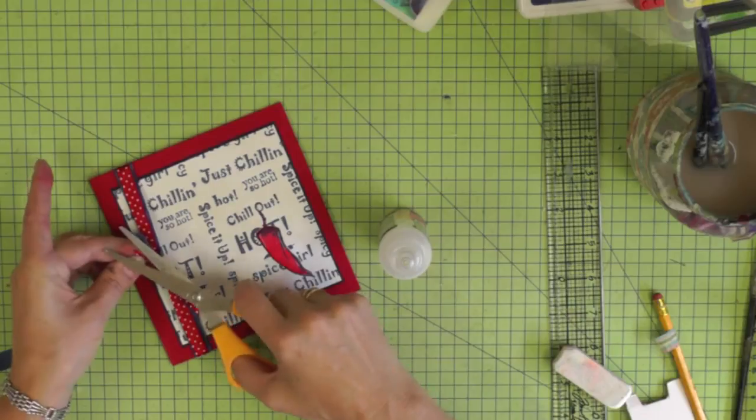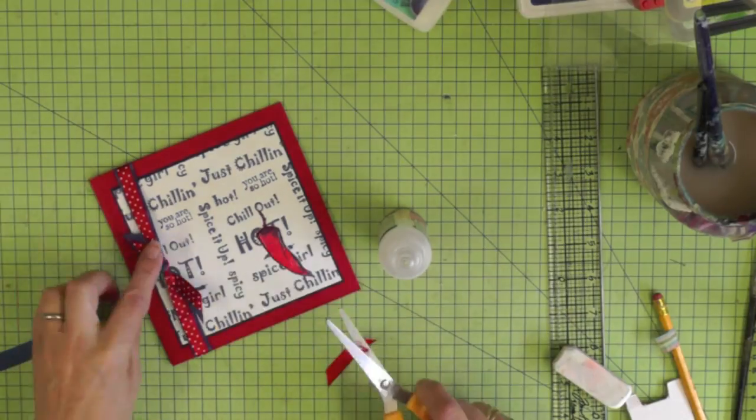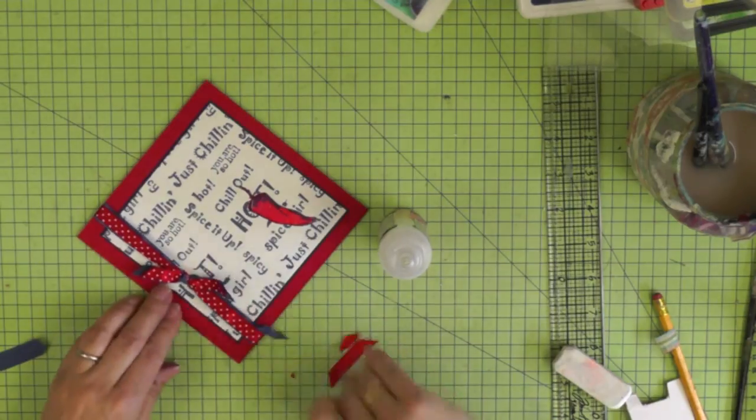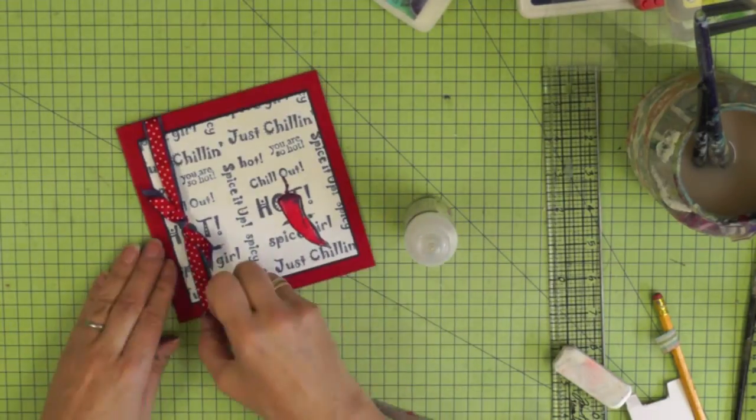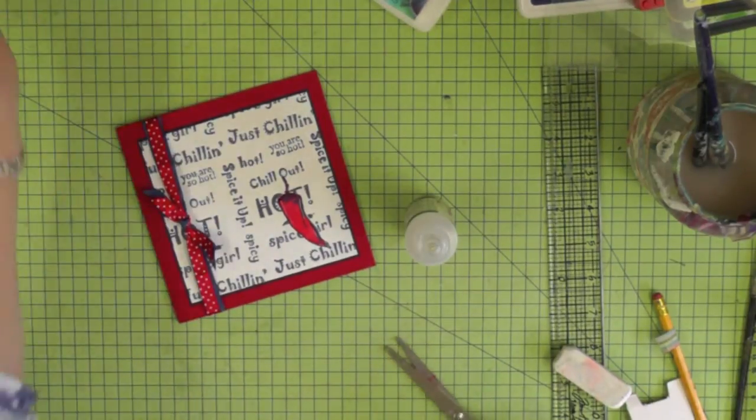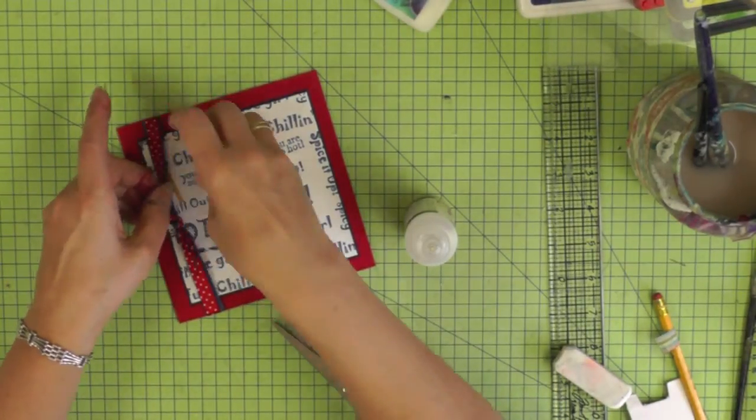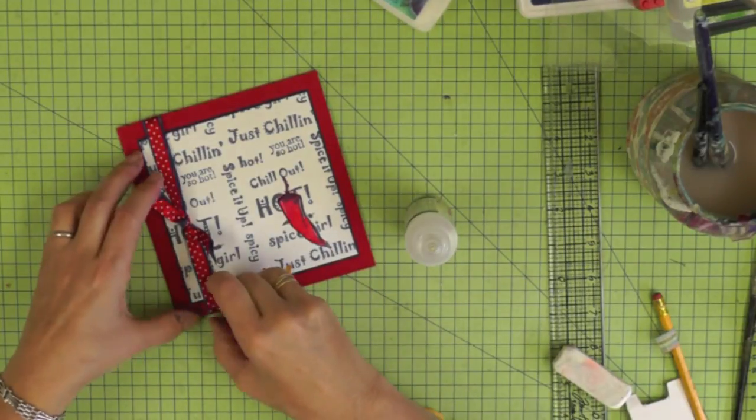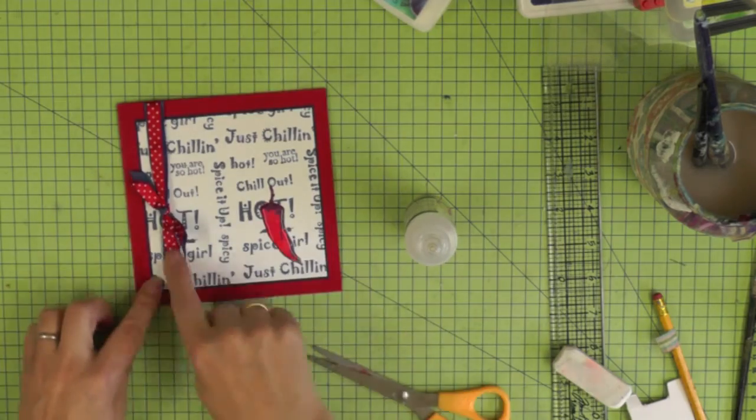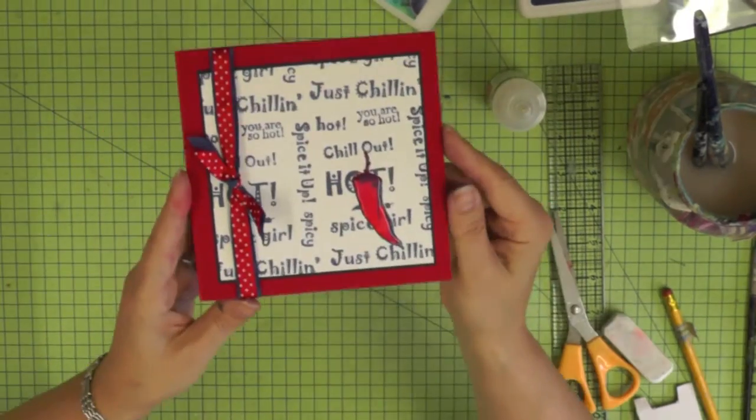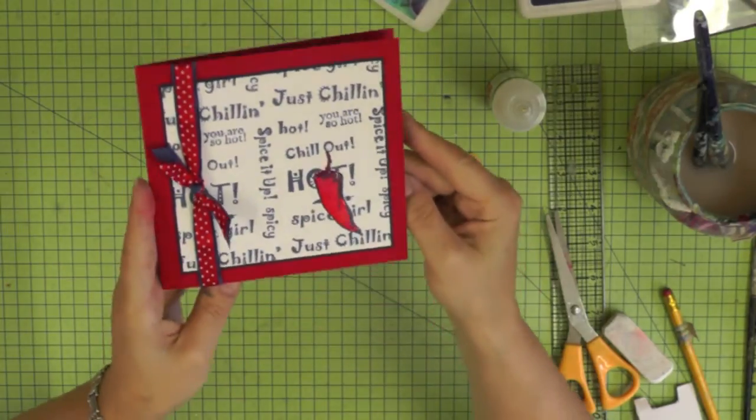I'm just twisting the ribbon slightly so that they sit nicely on the card. Now the other thing I just wanted to do is make sure that that ribbon wasn't going to travel on my card so I just want to put a little bit of double-sided tape underneath the ribbon to keep it in place. Just a small strip of double-sided tape just either side of that knot to stop the ribbon from sliding across the front of the card.